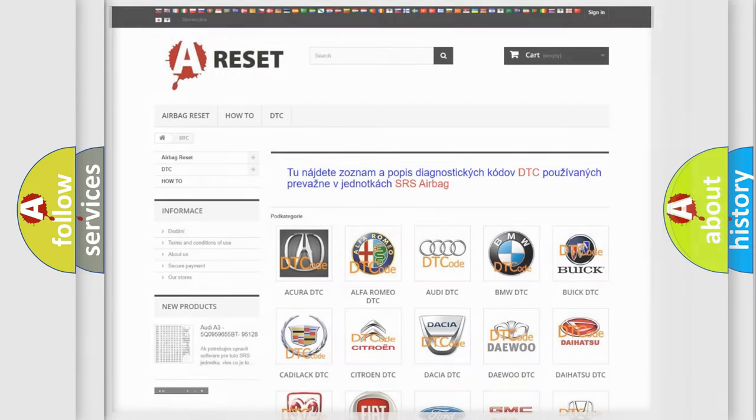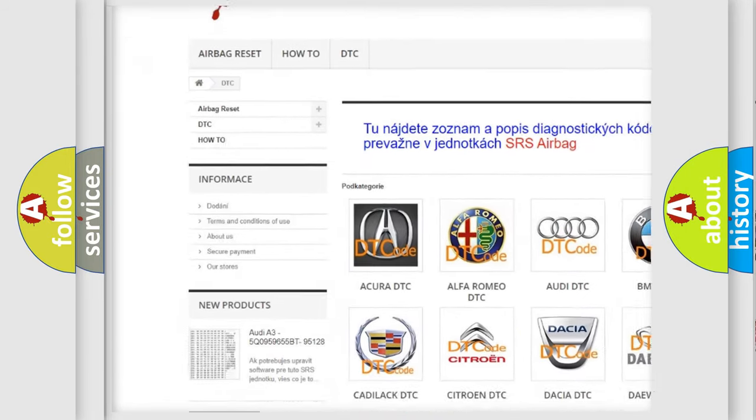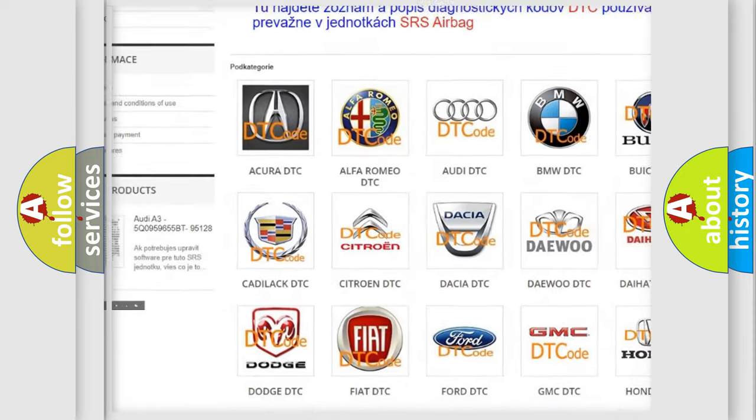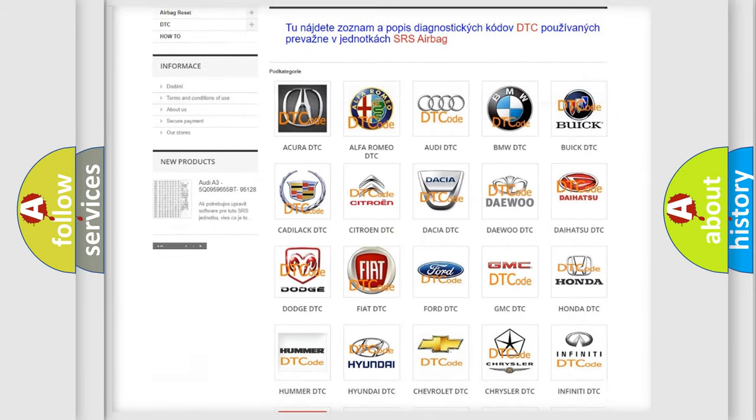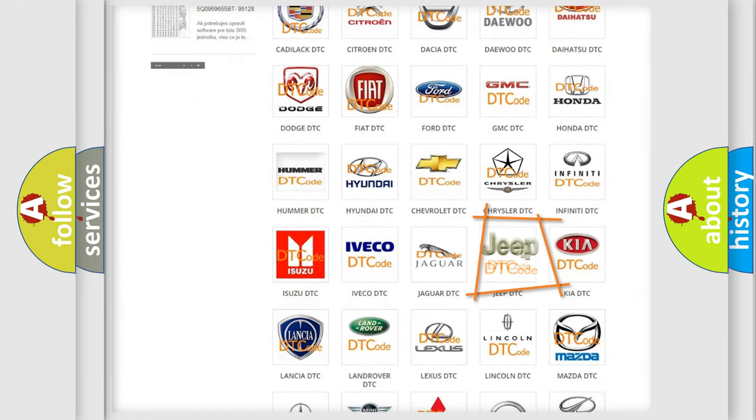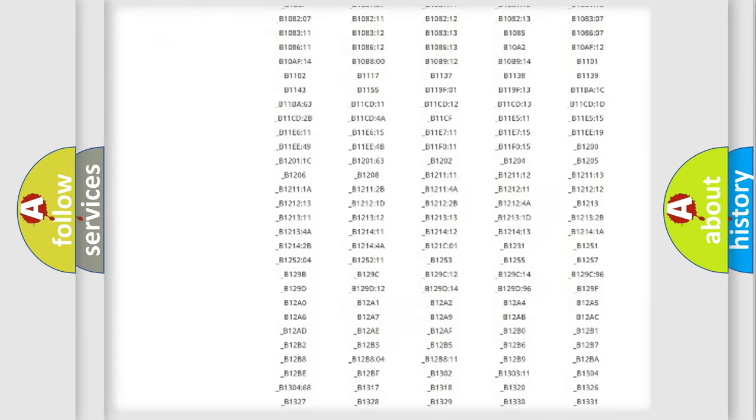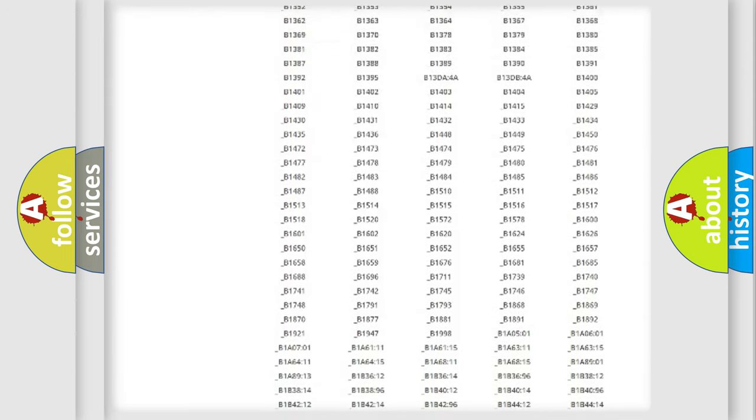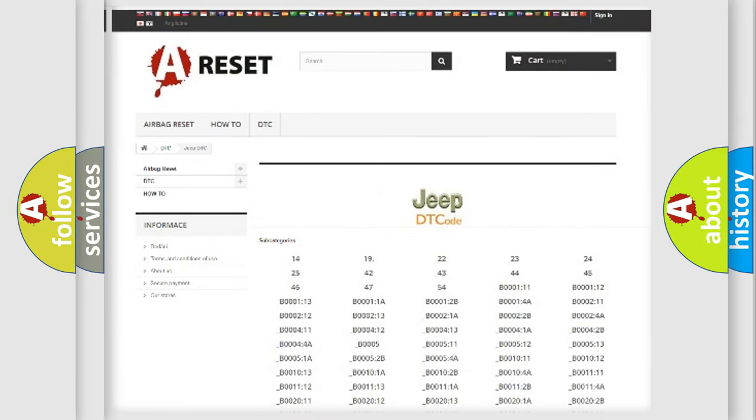Our website airbagreset.sk produces useful videos for you. You do not have to go through the OBD2 protocol anymore to know how to troubleshoot any car breakdown. You will find all the diagnostic codes that can be diagnosed in Jeep vehicles, also many other useful things.